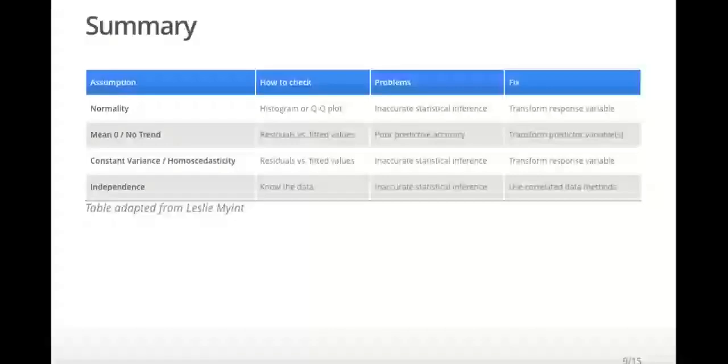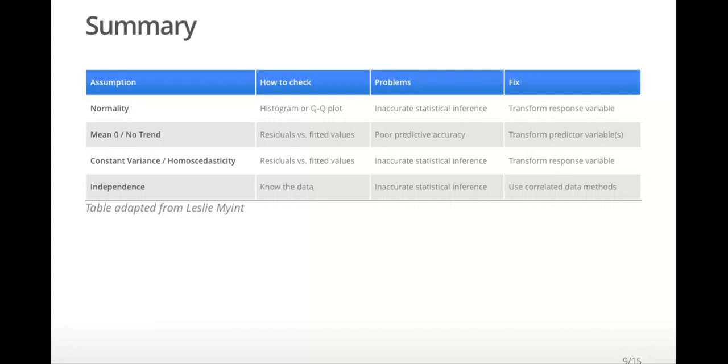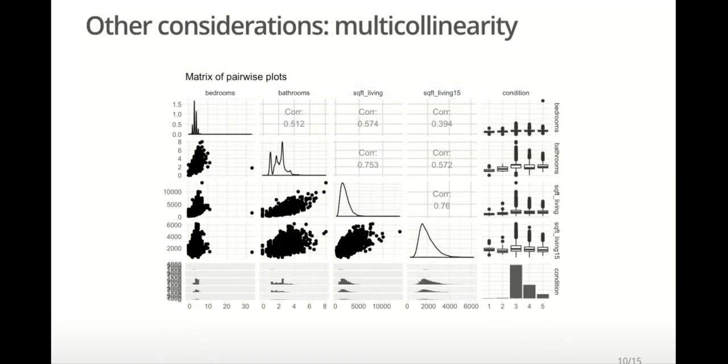This table summarizes the four linear model assumptions we discussed, how to check if the assumptions are satisfied, problems that might occur if they are violated, and suggestions for how you might fix the problem. Before moving on to showing how to implement this in R, I will discuss two other checks that are useful when building linear models.